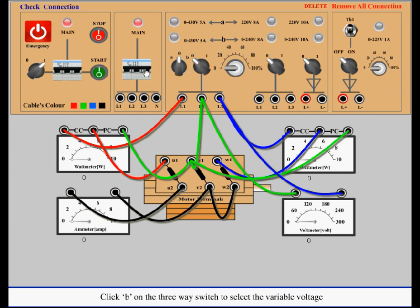Click B on the three-way switch to select the variable voltage. Select one on the next two-way switch. Select voltage with the voltage regulator knob. Note the readings of voltmeter, ammeter and wattmeter.